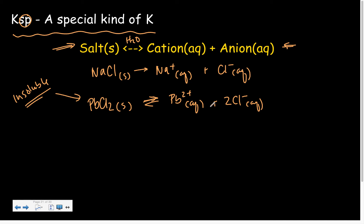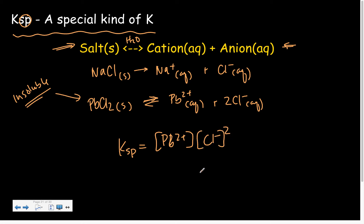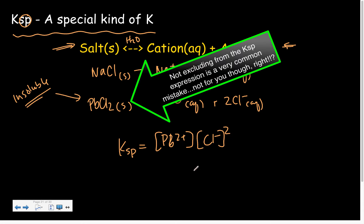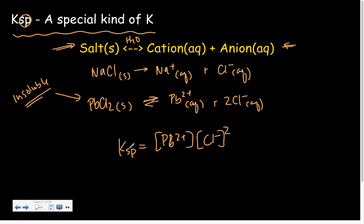If we're going to write a Ksp equation for this, it would look like — yes, fantastic — because we exclude the solids. So when you're asked to provide a Ksp expression for a salt dissolving in water, this is always what we're talking about: Ksp equals ions raised to their respective coefficients.